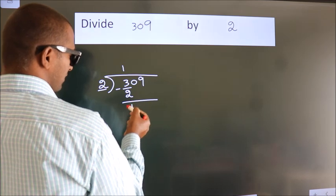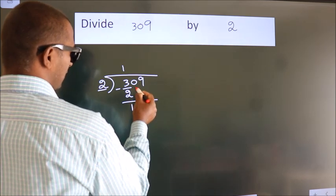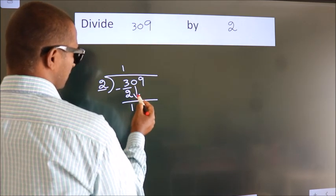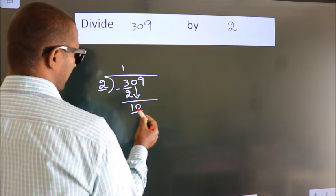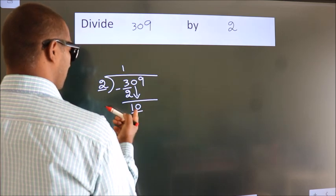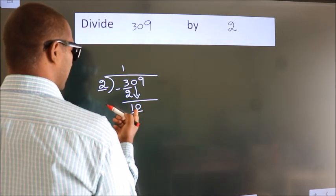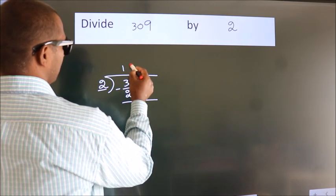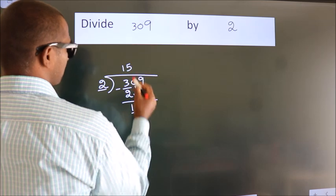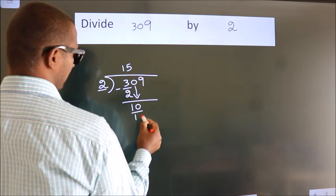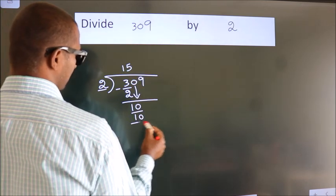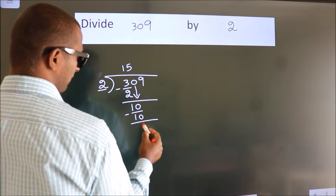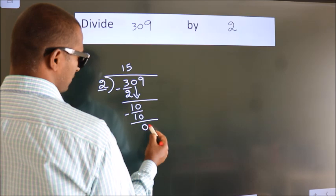After this, bring down the beside number. So, 0 comes down, giving us 10. When do we get 10 in the 2 times table? 2 fives are 10. Now we subtract. We get 0.